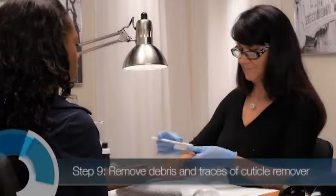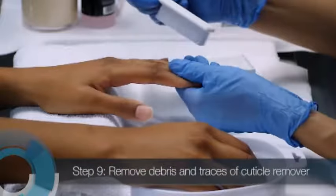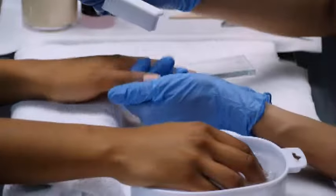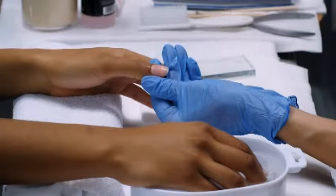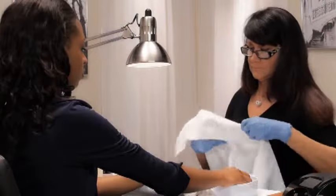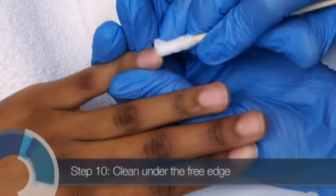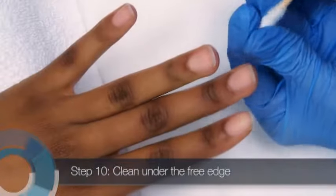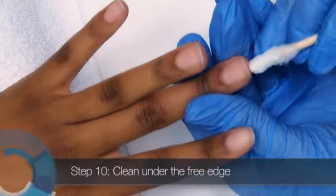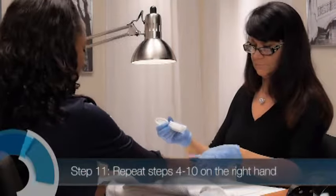Brush the left hand with a nail brush again to remove any bits of debris and traces of cuticle remover. Make sure all traces of cuticle remover are washed from the skin. Any product remnants can cause dryness or irritation. Once this is done, have the client rest her left hand on the table towel. Carefully clean under the free edge with a cotton swab or cotton-tipped wooden pusher. Be very gentle in this area. Aggressive cleaning can break the hyponychium seal under the free edge and cause onycolysis. Repeat steps 4 through 10 on the right hand.